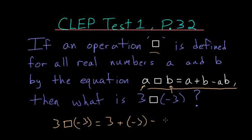the product of a and b, which is 3 times -3. Now 3 plus -3, or in other words 3 minus 3, equals 0 from these first two terms. Then we have minus 3 times -3, which is -9, and minus negative 9 is the same thing as 9.